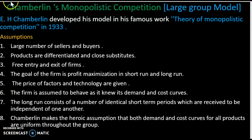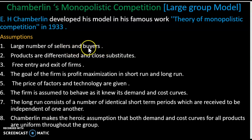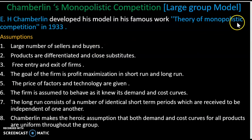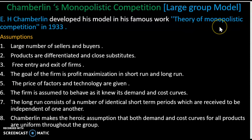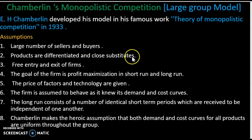The assumptions of monopolistic competition: first, there is a large number of sellers and buyers — in perfect competition this is an infinite number. Large number of sellers and buyers is the foundation. Second, products are differentiated but are close substitutes.